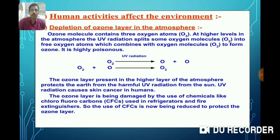This layer protects us from harmful UV radiations. O2 combines with atomic oxygen to form O3, ozone. The ozone present in the higher level of the atmosphere protects the Earth from harmful UV, that is ultraviolet radiation, which can cause skin cancer, cataract, and other disorders like weakening of the immune system in humans.